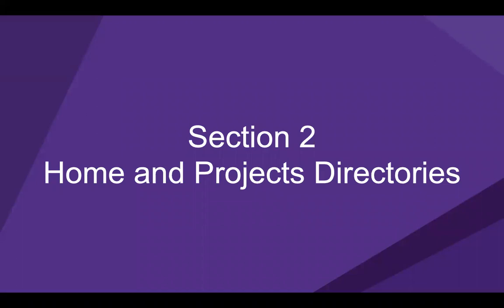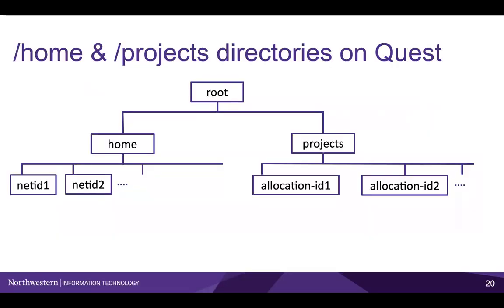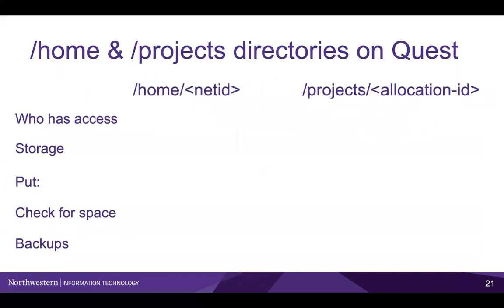Now that we have gone over the bash basics, let's go over the home and project directories. Everyone who has access to Quest has a home directory, which is /home/netID. You can find your project directory at /projects followed by whichever allocation ID you are part of. The home and projects directories differ in several ways. First, let's talk about who has access. Only you can access your home directory, whereas everyone in the allocation can access the files you put in the project's directory.